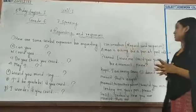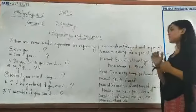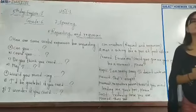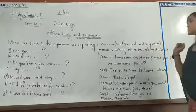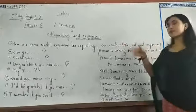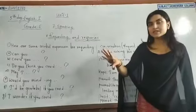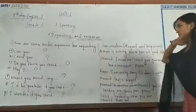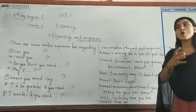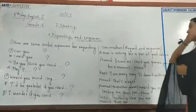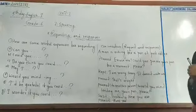In this conversation, the subject matter of requests and responses is included. The topic is: a man is asking for a pen at the post office. We have to make a conversation that must include a request and then the response to that request. A man has gone to the post office and he wants to ask for a pen, so he says: 'Excuse me, could you give me your pen for a moment, please?'